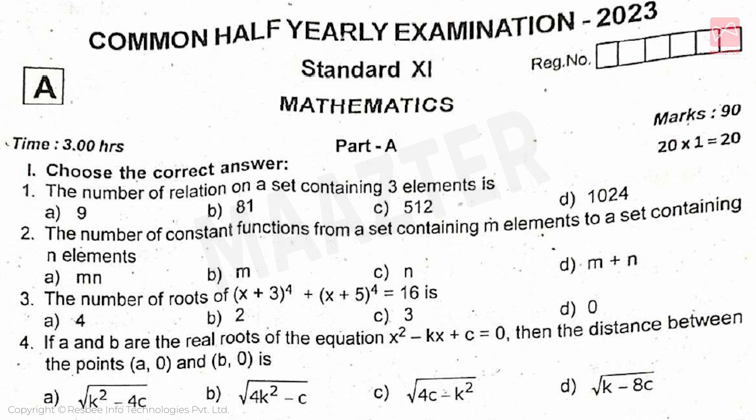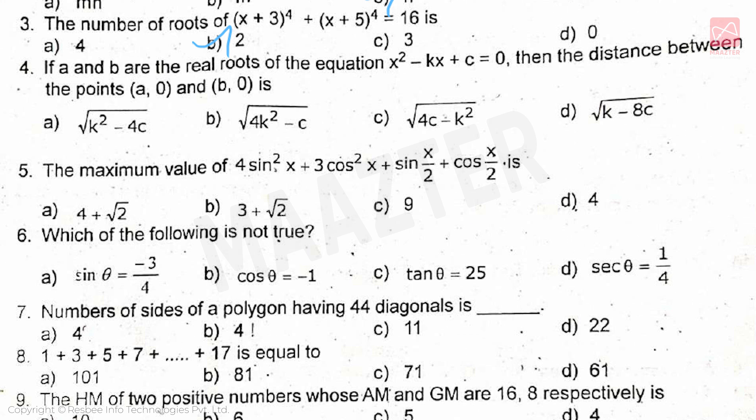First, the number of relations on a set containing 3 elements is, answer is option C. Next, the number of constant functions from a set containing m elements to a set containing n elements, answer is option C. Next, the number of roots of (x + 3)^4 + (x + 5)^4 = 16 is, answer is option B.